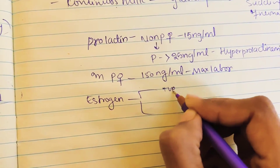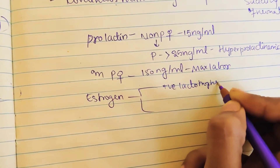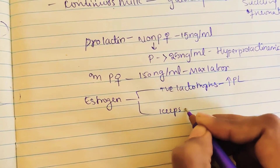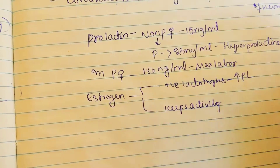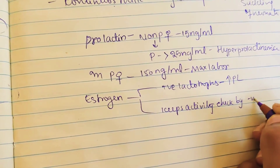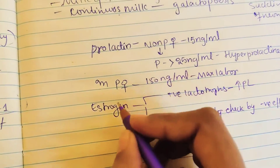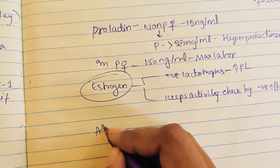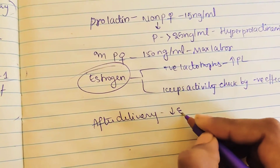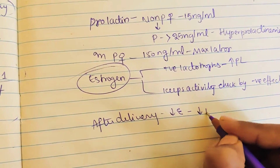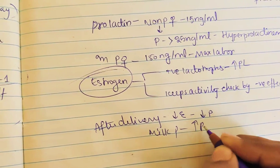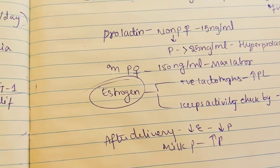Estrogen has a positive effect on lactotrophs, which increases prolactin. It also keeps activity in check by a negative effect — so estrogen has both positive and negative effects on prolactin. After delivery, estrogen level drops, and even prolactin will drop. But when it comes to milk production, prolactin will rise again because milk production is done by prolactin.